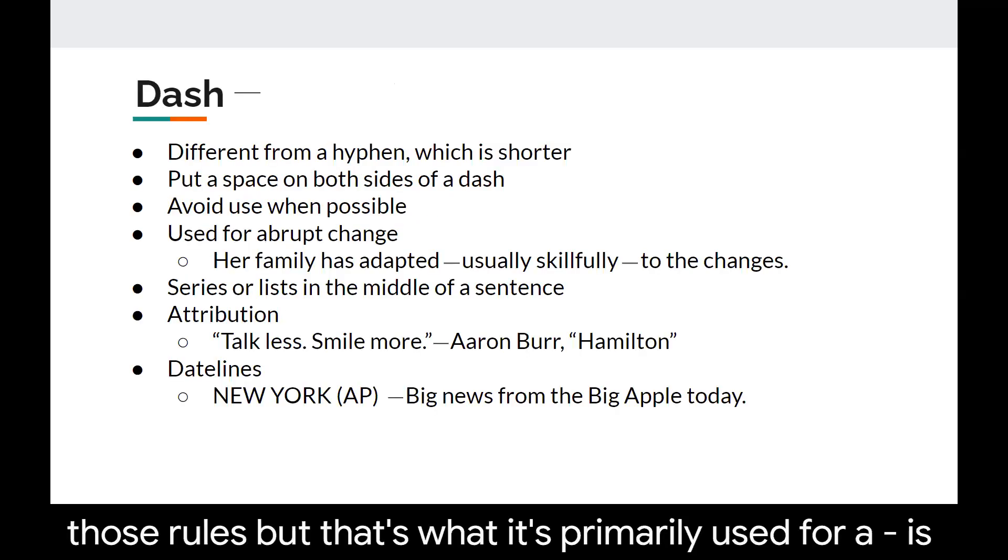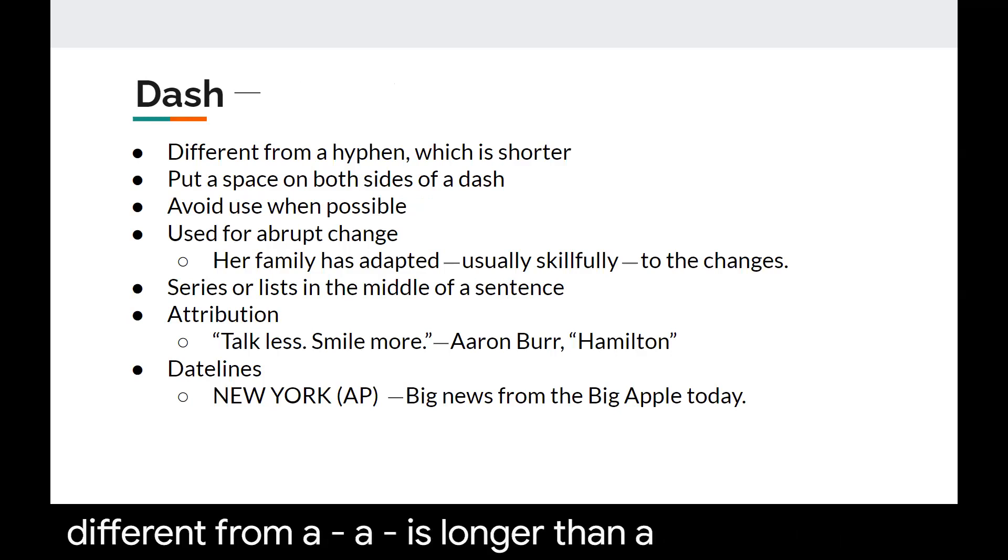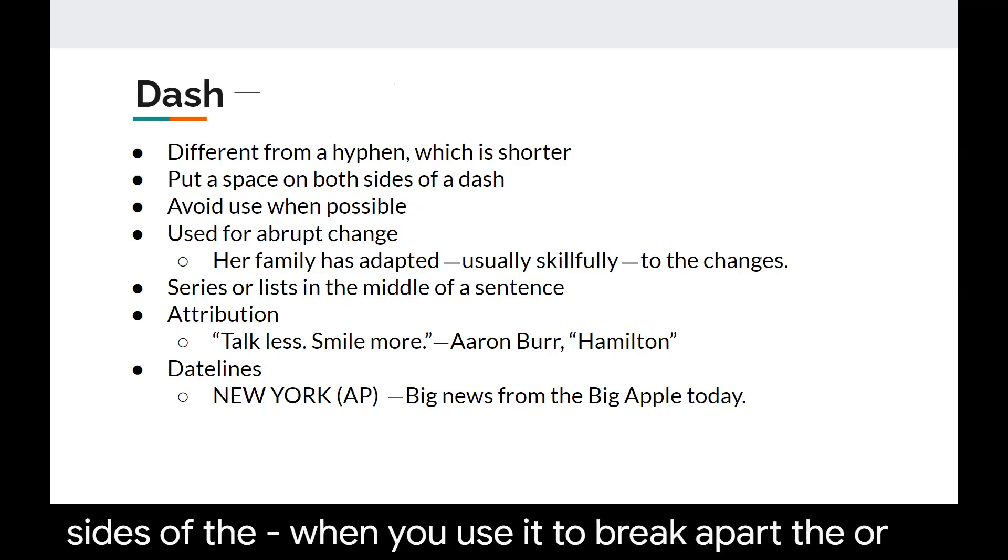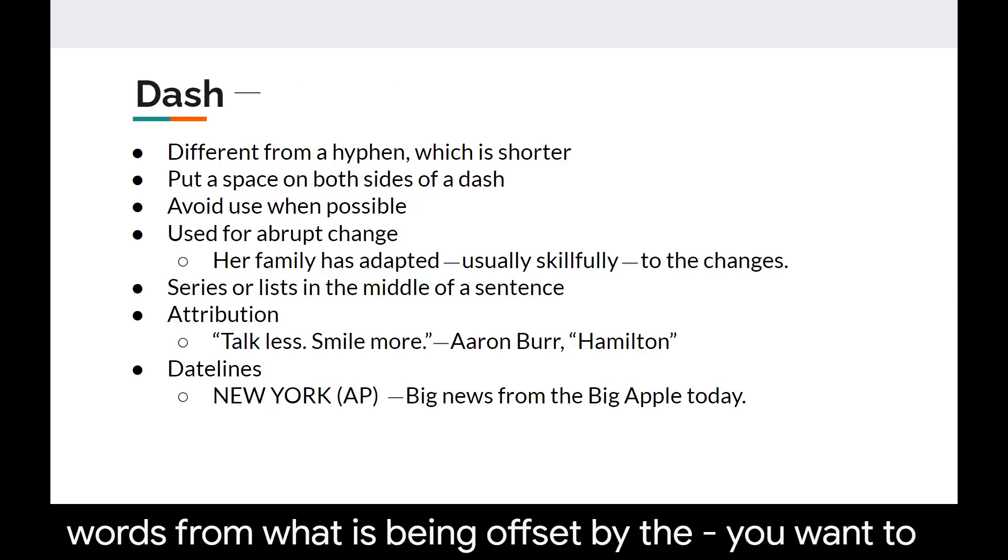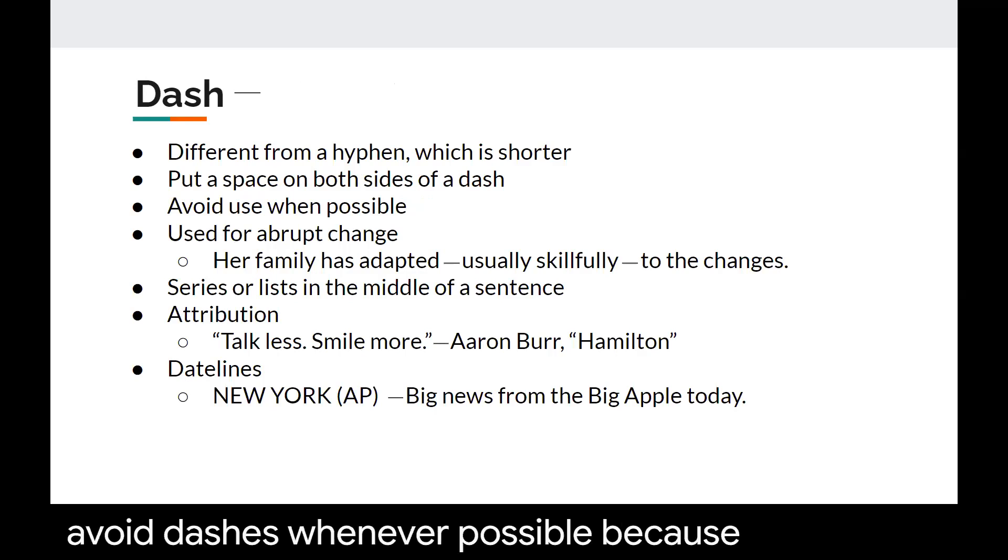A dash is different from a hyphen. A dash is longer than a hyphen. A hyphen is the shorter one and you're going to put a space on both sides of the dash when you use it to break apart the words from what is being offset by the dash. You want to avoid dashes whenever possible because a lot of times they don't come across in copy very easily. But dashes can be used for an abrupt change in thought. They can also be used for a series or list that appear within the middle of a sentence and most commonly they're used for attribution of quotes or datelines within the lead of the story.